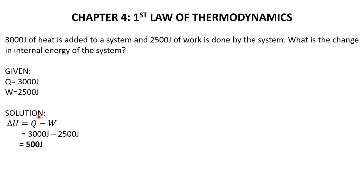The formula we're going to use is change in U equals Q minus W. Then, we substitute the values: 3,000 joules minus 2,500 joules. Our final answer is 500 joules.